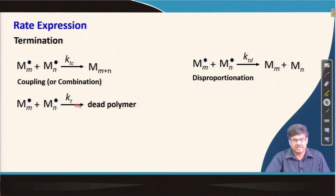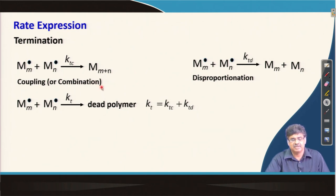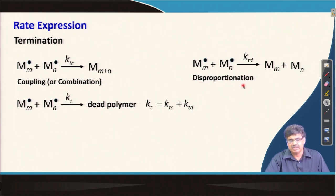In general, the termination step has rate constant K_T, which includes both K for coupling/combination and K for disproportionation. If they are equal, K_T is the sum of both. If they are not in equal proportion — which is indeed the case in most situations — and if termination happens mostly by coupling or combination, then K_T equals K_TC. If A is the fraction of propagating radicals terminated by combination and (1−A) by disproportionation, then K_T = A·K_TC + (1−A)·K_TD.